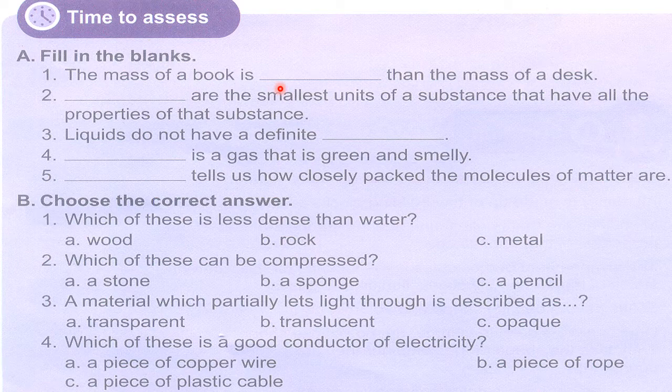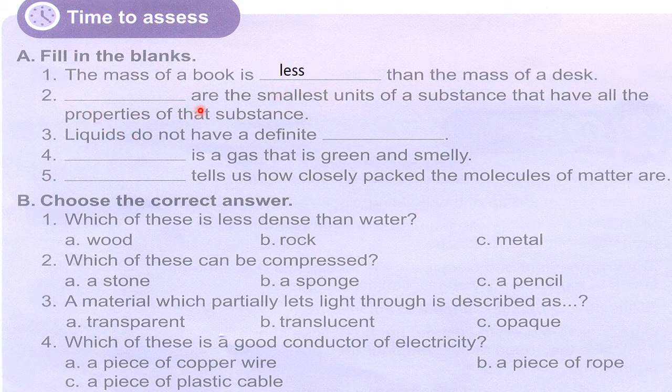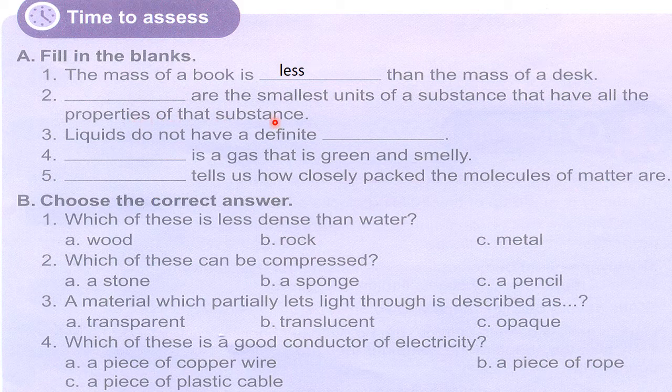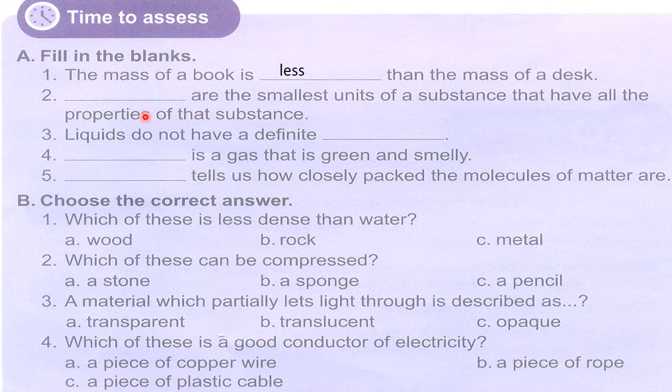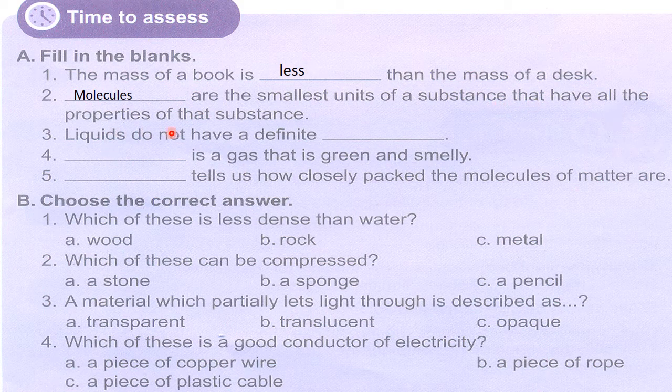Book is small so its mass will be less, right. Dash are the smallest units of substance that have all the properties of that substance. Right, molecules are the smallest units of a substance that have all the properties of that substance.